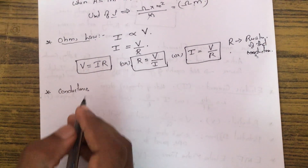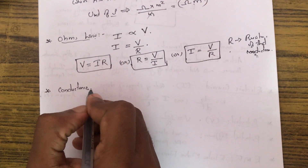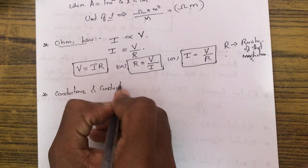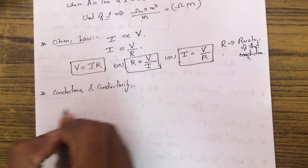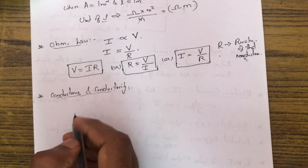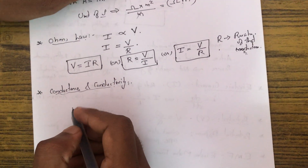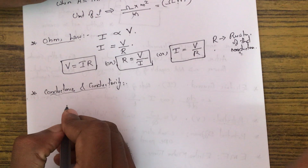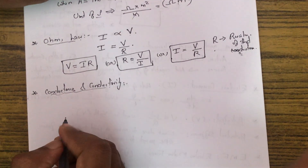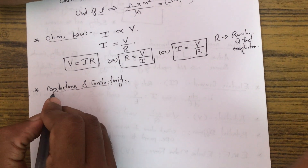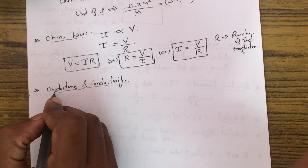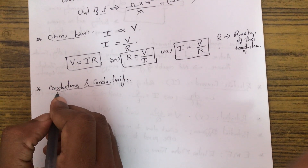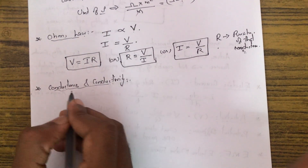Now let us discuss conductance and conductivity. Conductance is the property of a conductor that allows the passage of current — the opposite of resistance. Resistance opposes current flow, while conductance allows it. Conductance is represented by G.